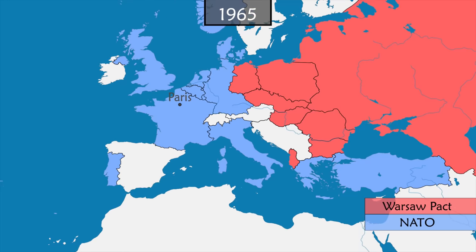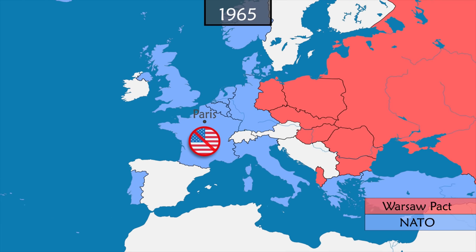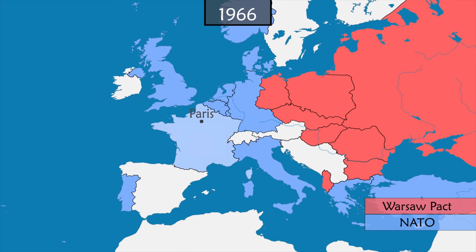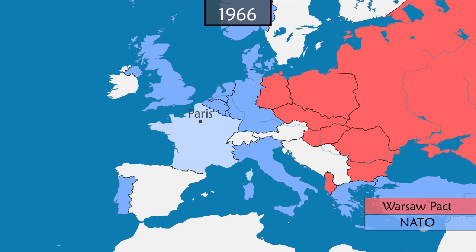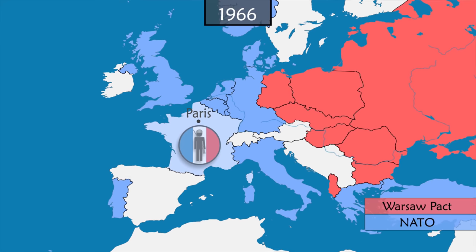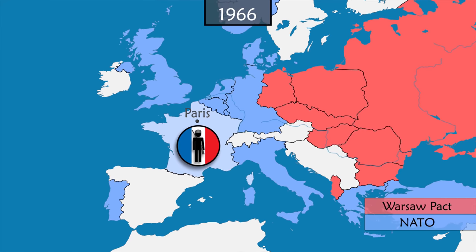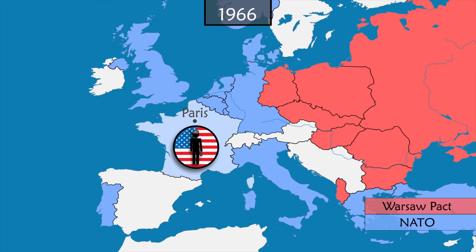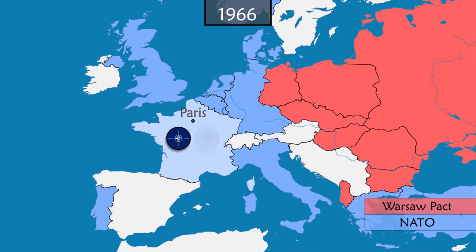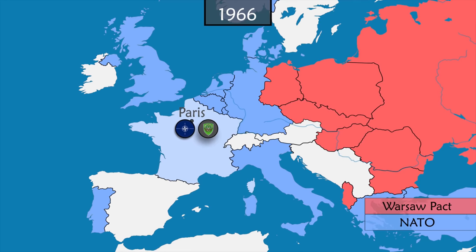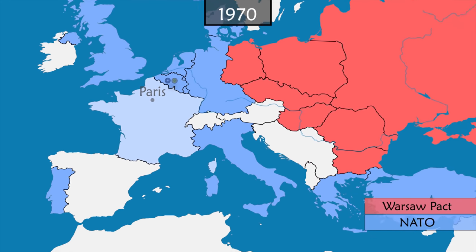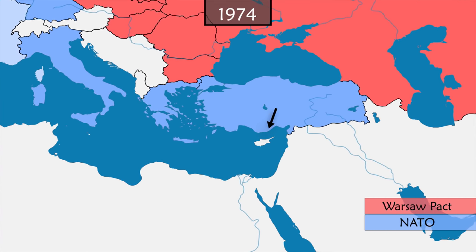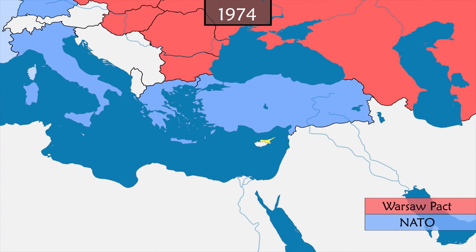In France, President Charles de Gaulle is opposed to U.S. dominance within the alliance. He decides that France must leave NATO's integrated command while still remaining a member of the alliance. French troops will no longer participate in NATO military actions, the 30,000 U.S. troops present in France must leave, and NATO headquarters and military command are moved to Belgium.